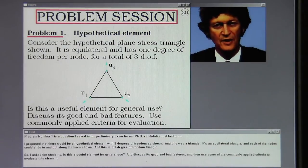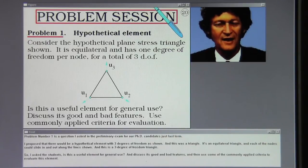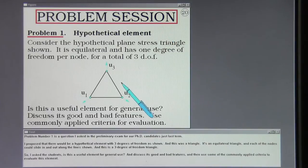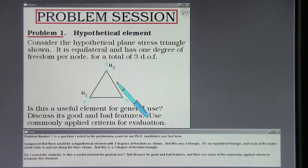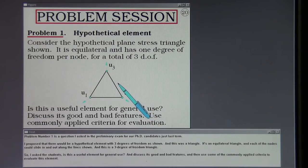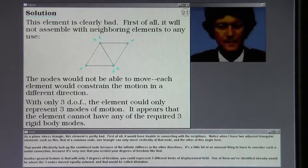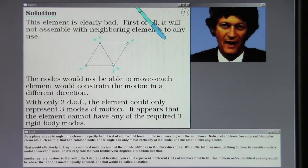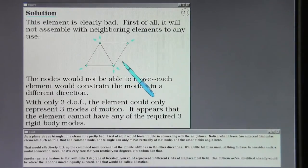Problem number 1 is a question I asked in the preliminary exam for our PhD candidates just last term. I proposed that there would be a hypothetical element with 3 degrees of freedom as shown. And this was a triangle, it was an equilateral triangle, and each of the nodes could slide in and out along the lines shown. And this was a 3 degree of freedom triangle. So I asked the students, is this a useful element for general use? And discuss its good and bad features. And then use some of the commonly applied criteria to evaluate this element. As a plane stress triangle, this element is pretty bad. First of all, it would have trouble in connecting with the neighbors.